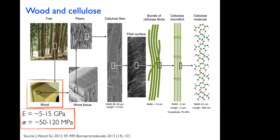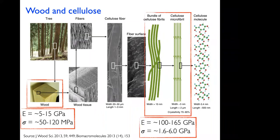5 to 15 GPa for wood is exciting, but not super exciting. As you go further down to the constituent that builds wood — all the way down to cellulose fiber — at the cellulose fiber length scale, this is where you do conventional pulping to get cellulose fiber to make paper. But if you refine further, you get down to bundles of cellulose fibrils, down to cellulose microfibrils of around 50 nm or even smaller, down to 3 nm. The performance of these fibers is approximately 100 to 165 GPa in tensile modulus.